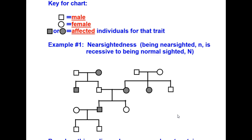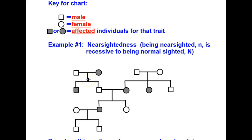Let's take a look at what we have in this pedigree chart. We have a male and a female. The male is normal and the female is nearsighted. They mate and produce two offspring, both boys. One was nearsighted and the other one was normal.